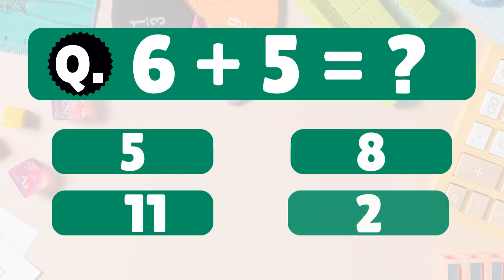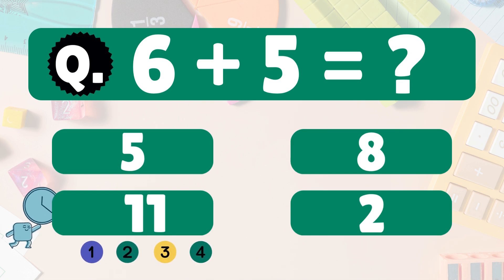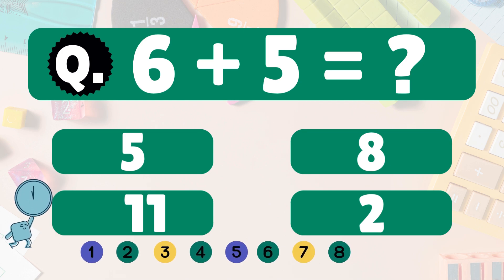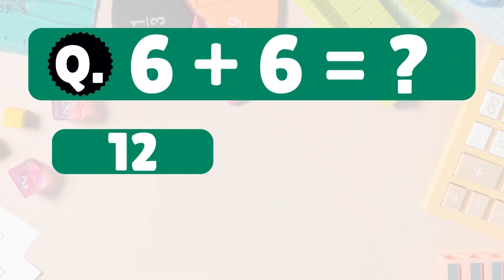6 plus 5 equals? 6 plus 5 equals 11. Count it loud. 1, 2, 3, 4, 5, 6, 7, 8, 9, 10, 11. Let's go. 6 plus 5 equals 11. Woohoo. Next.